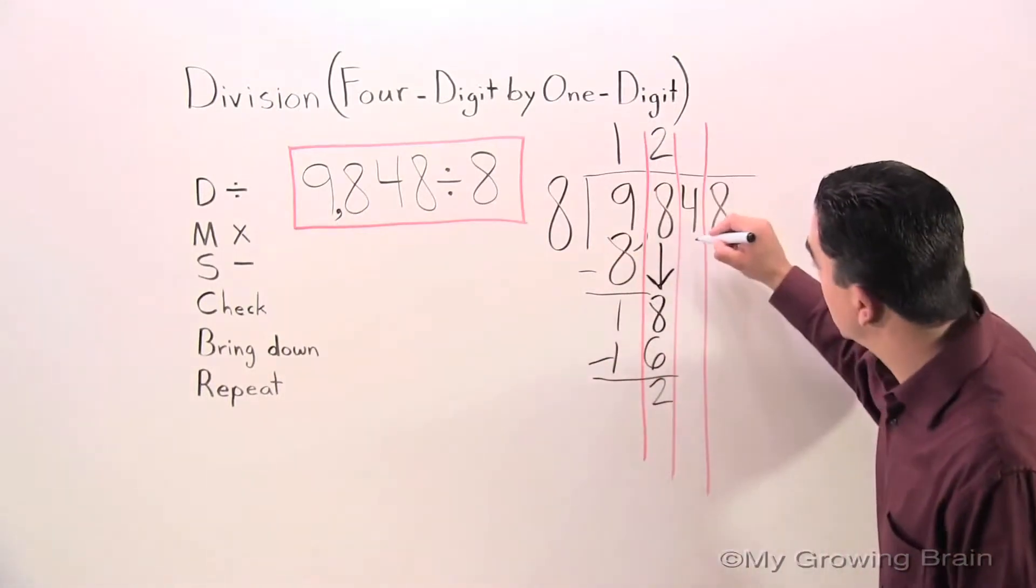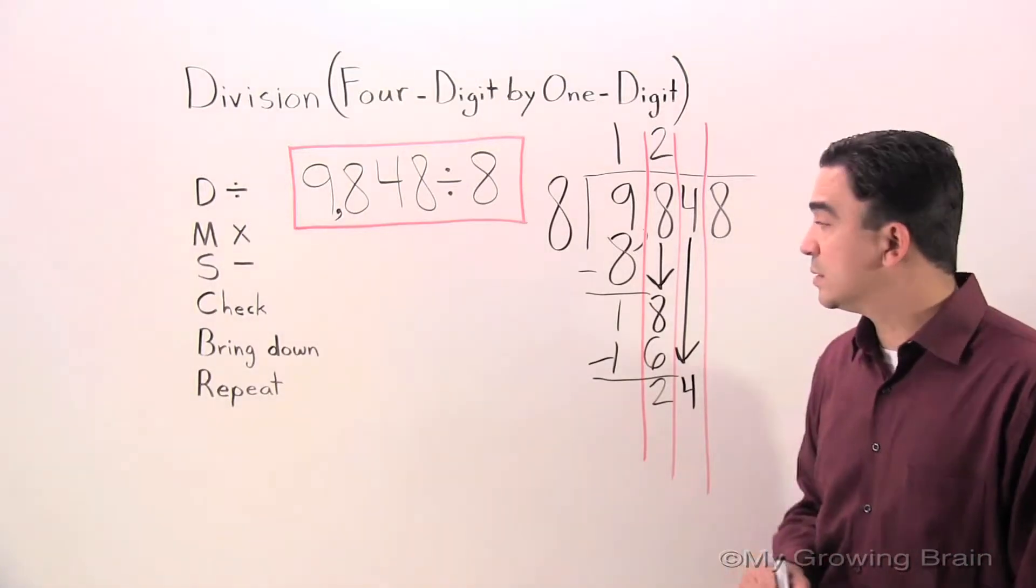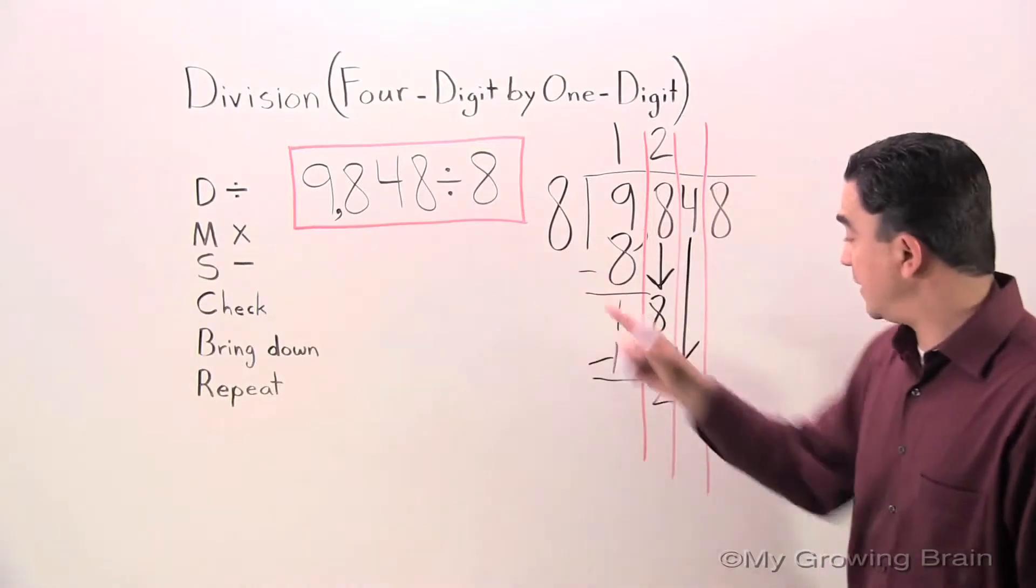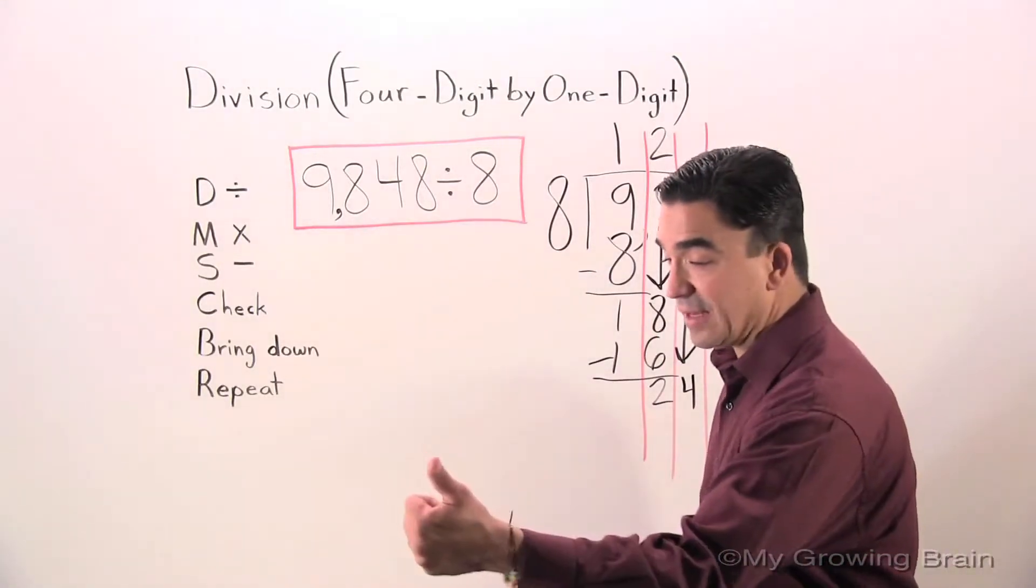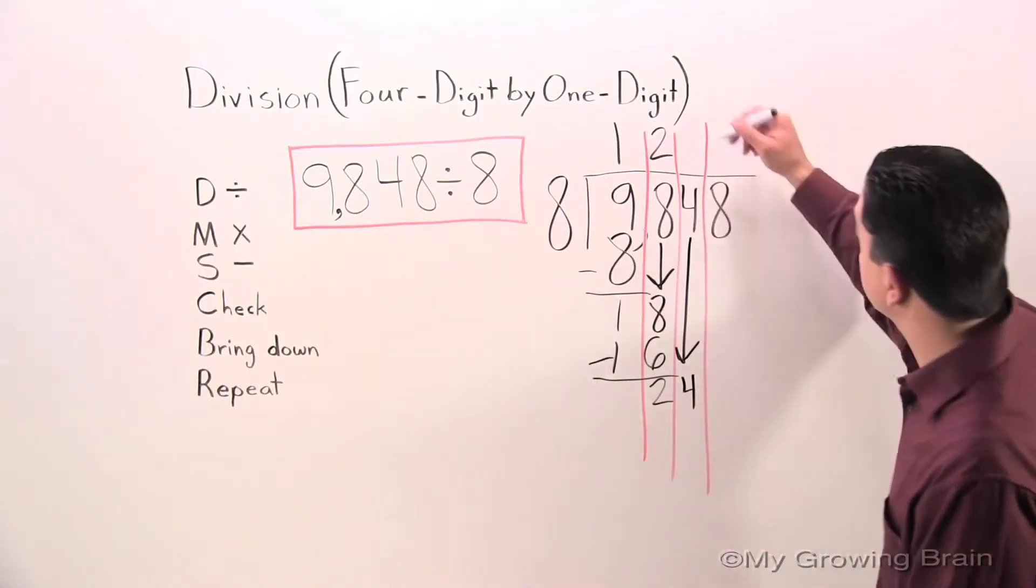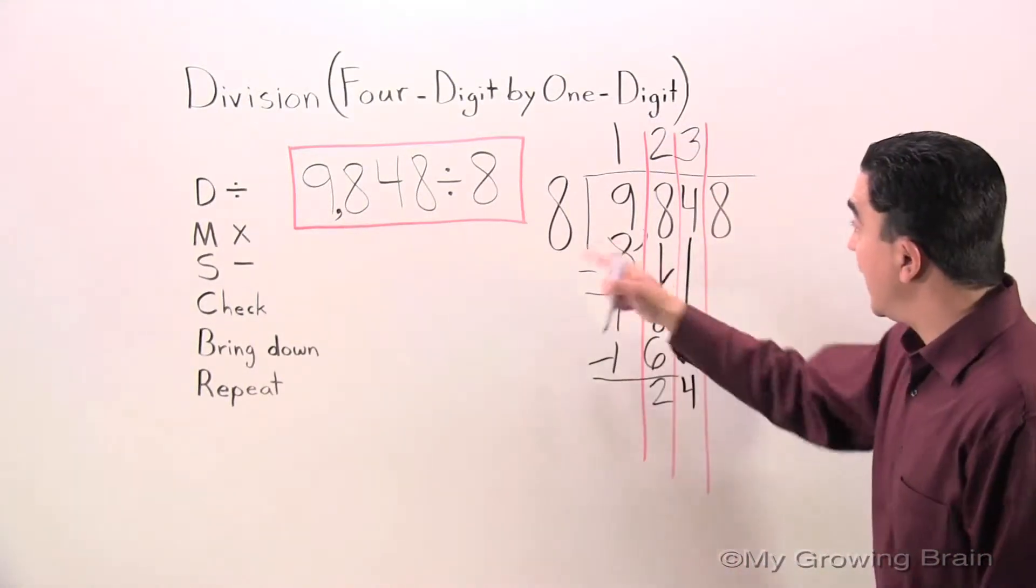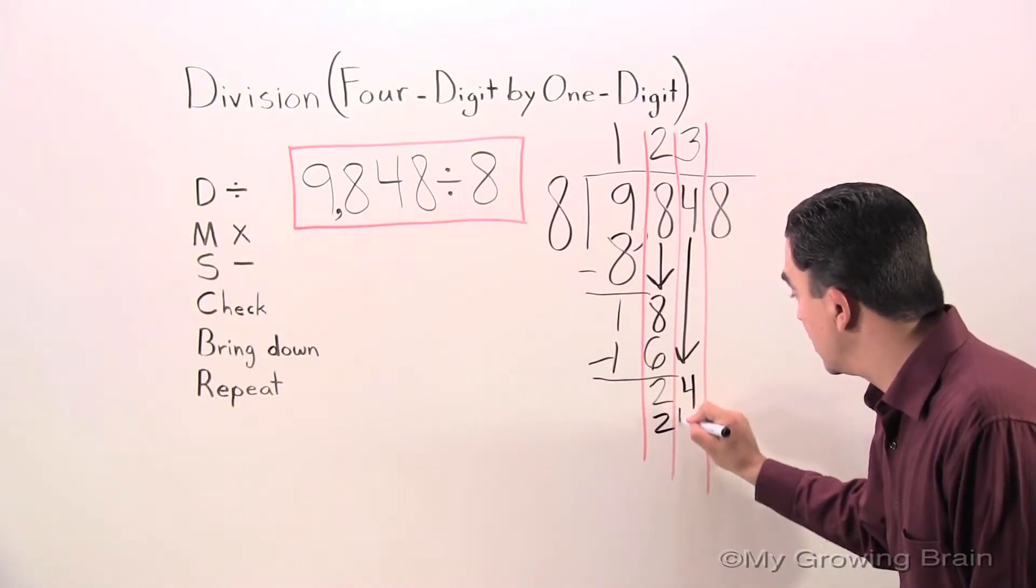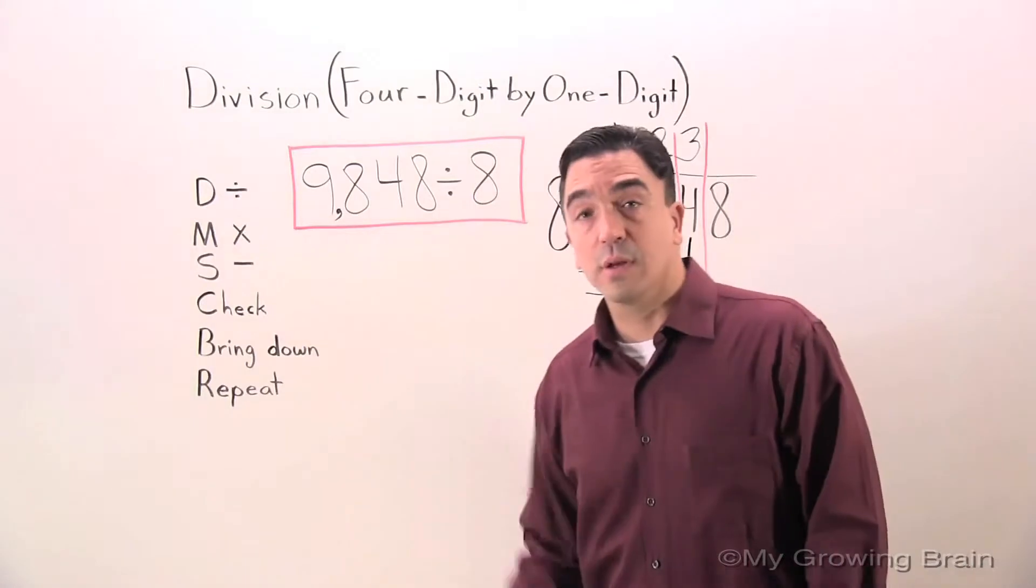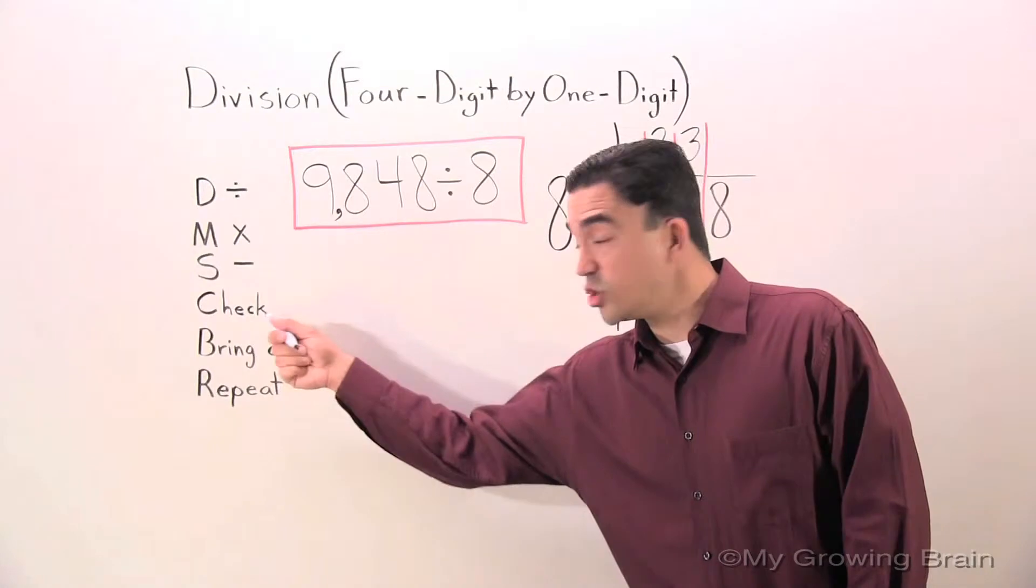Bring down 1. Repeat the process. Back to divide. 8 into 24. 8, 16, 24. 3 times. 8 times 3, 24. Subtract. Check.